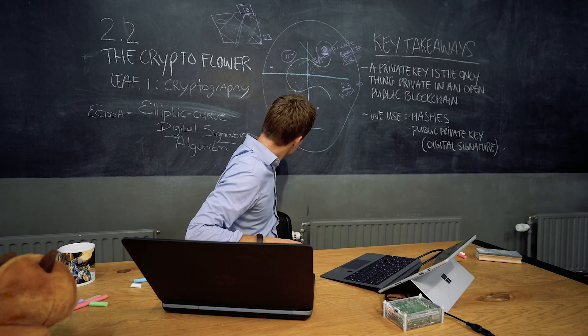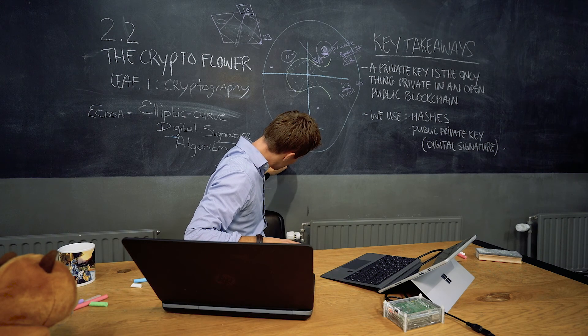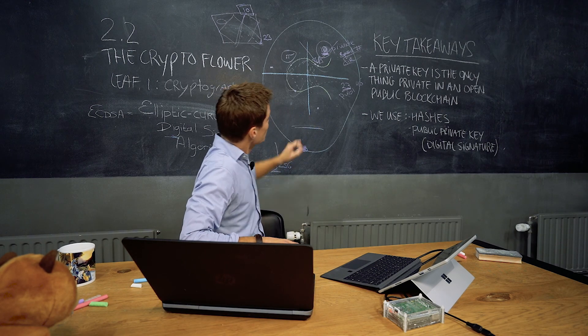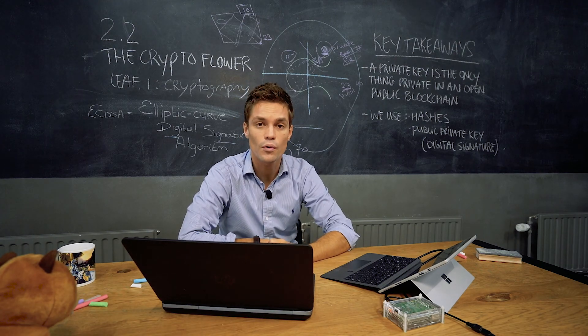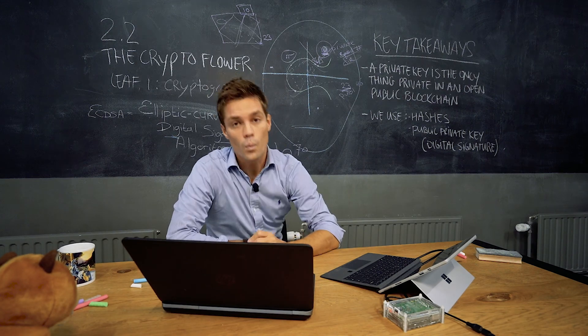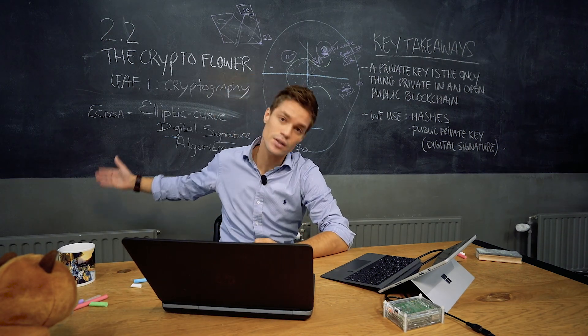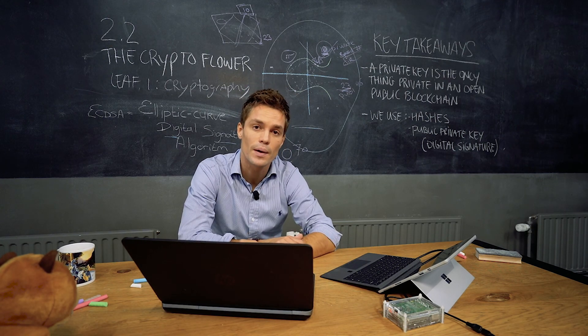And every private key is nothing more than a very, very, very big number. Somewhere between 10 to the 70 or basically 2 to the 256. That we shoot in an elliptic curve resulting, of course, in a very big number as outcome, which we hash by using the hash algorithm so that we can actually read it, resulting in your private public key pair.